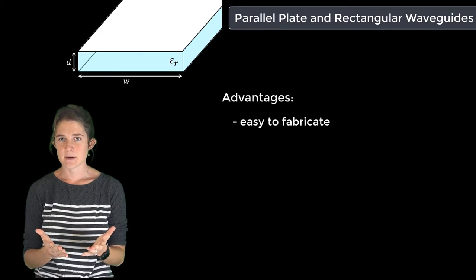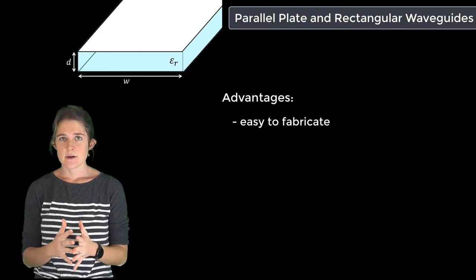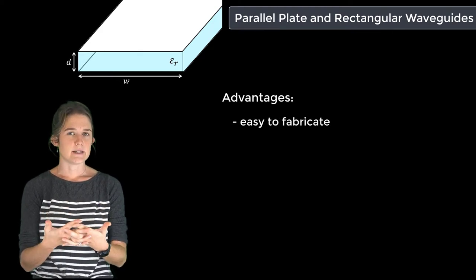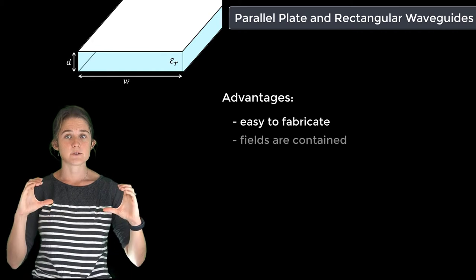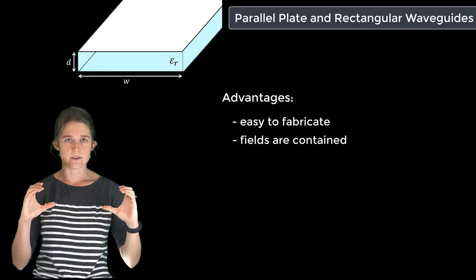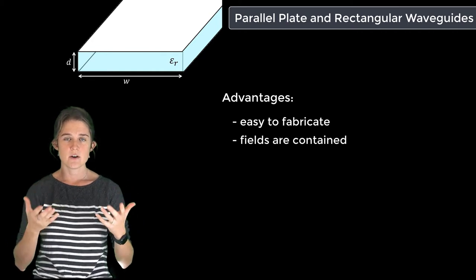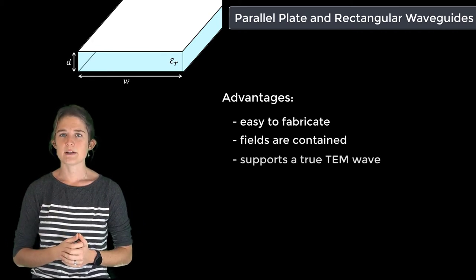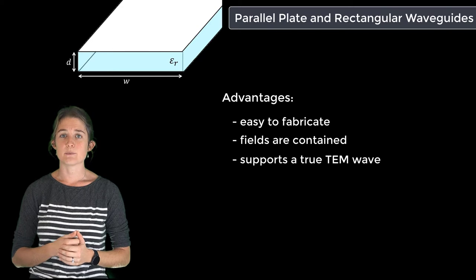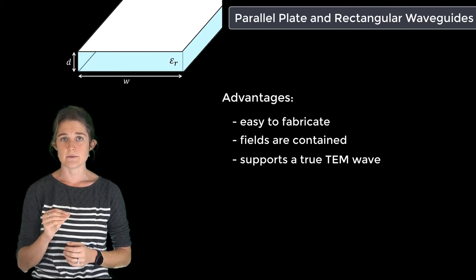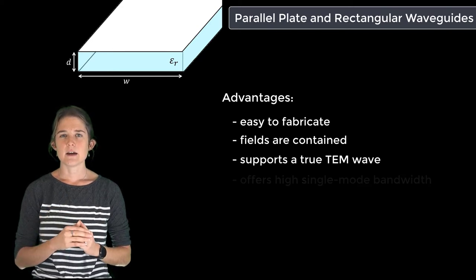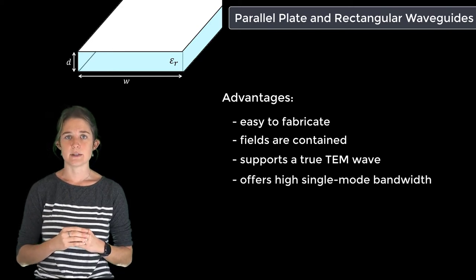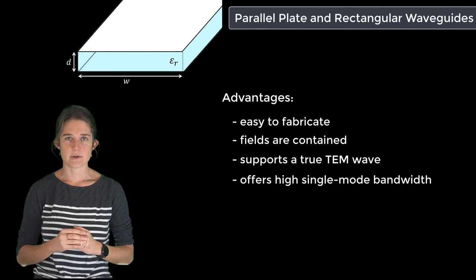A parallel plate waveguide is easy to fabricate like a microstrip, but it eliminates most of the susceptibility to interference because the fields are mostly internal. Also, unlike a microstrip, a parallel plate waveguide supports a true TEM wave. They also offer a relatively high bandwidth of single mode operation.